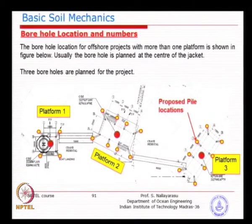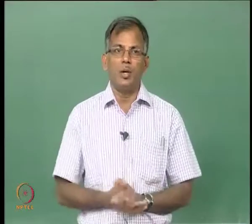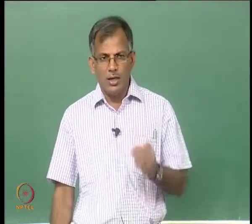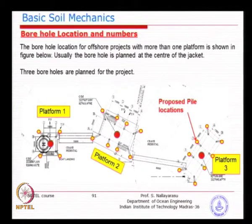Of course, you can ask why not we do only one borehole — that may represent the whole area, but we do not know. It all depends on the variability and distribution of the strata profile. Sometimes, if you have three boreholes, you can actually make a profile and see the trend of change — what really happens to layer 1, layer 2, and layer 3 — and then come up with a common design profile. But if it is highly variable in nature, you have to be cautious in using this.